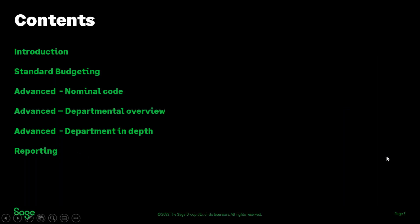We're going to be looking at the budget feature today and the four different types of budgeting available depending on what version of the software you're using. First, a brief introduction to budgeting, then standard budgeting, then advanced nominal code, advanced departmental overview, and advanced departmental in depth. We'll then show some basic reports for each type. Apologies — the handout doesn't appear to be available right now but it is on Sage City and I will upload it to the handouts link during the questions at the end.